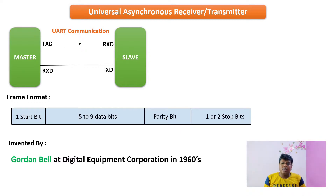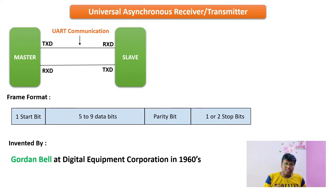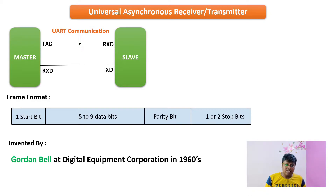The first protocol we are going to see is Universal Asynchronous Receiver and Transmitter, also known as UART. As shown in the figure, the connections use two wires: the TX of the master is connected to the RX of the slave, and the RX of the master is connected to the TX of the slave. This is a one-on-one serial communication between one master and one slave.